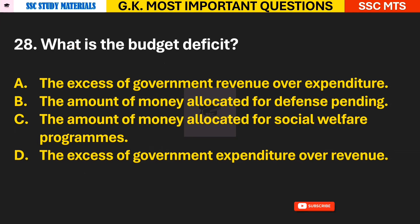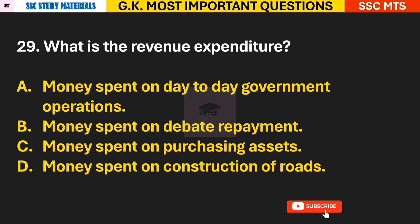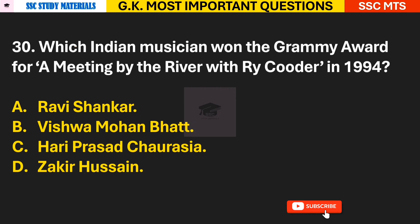Question 28: What is budget deficit? Answer D — the budget deficit is the excess of government expenditure over revenue. Question 29: What is revenue expenditure? Answer A — revenue expenditure is the money spent on day-to-day government operations.